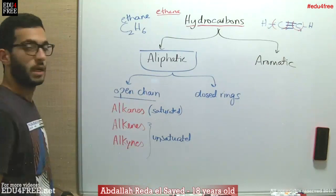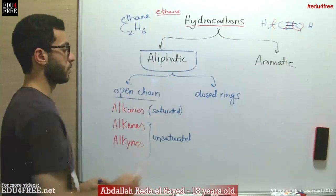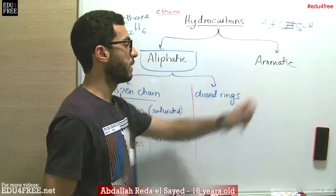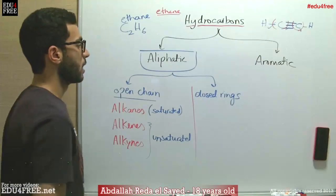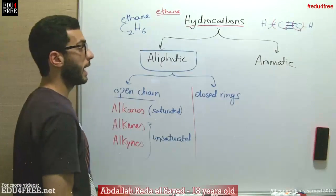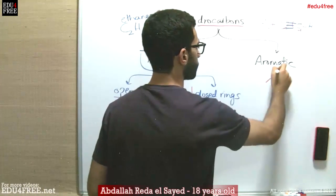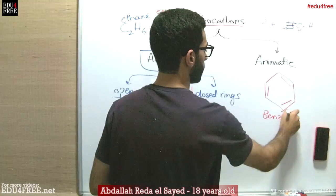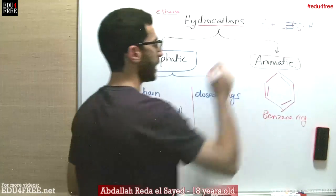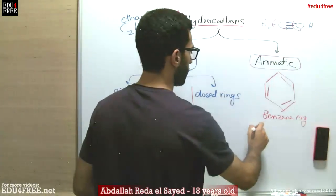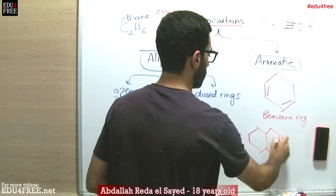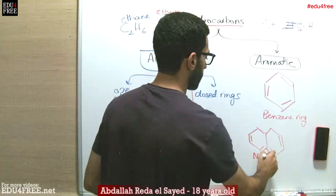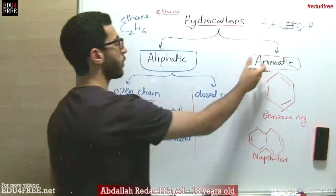This covers the open chain aliphatic hydrocarbons. Then there are closed rings. We also have aromatic hydrocarbons, which are unsaturated because they contain double bonds — like the benzene ring, which is an aromatic ring, or naphthalene. These are examples of aromatic rings.